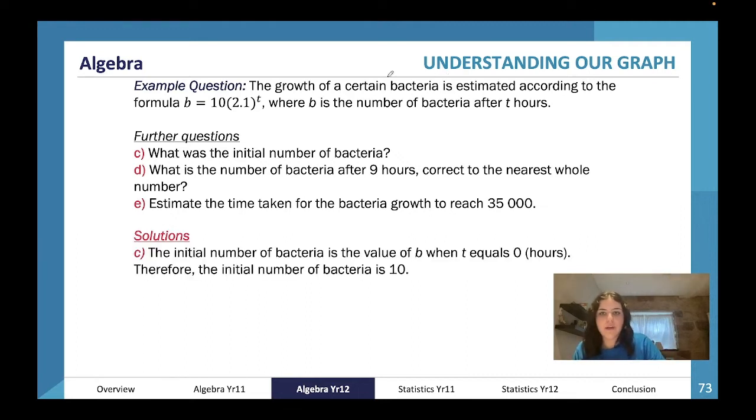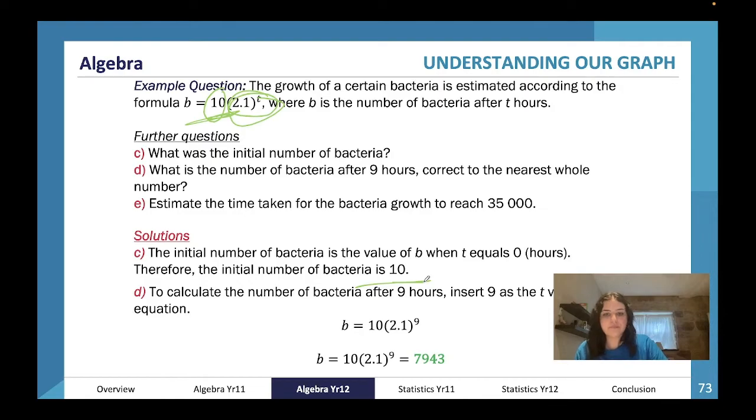Let's look at our formula: b = 10, and then this is our function where our hour comes in. We've already got 10 bacteria; the initial number is 10. To calculate it after nine hours, we do what we just did: we put nine where we put our t, which gives 7,943.